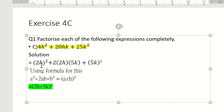So, first 2h whole square because here we have 4h square, plus 2 from the formula. You know about the formula very well. So, first value that is a, 2h, and second value that is 5k and 5k square.